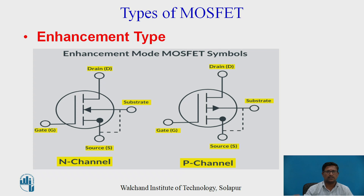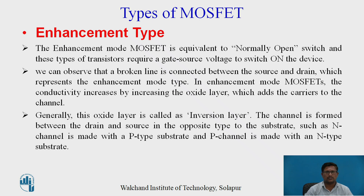The second type is the enhancement type MOSFET. In the enhancement type, there is a dotted or broken line between drain and source; the rest is similar to the depletion type. N-channel and P-channel enhancement mode MOSFETs are shown. The enhancement mode MOSFET is generally called a normally open switch — it requires a gate-source voltage VGS to switch the device on. The broken line between source and drain represents enhancement mode. Conductivity increases by increasing the oxide layer, which adds carriers to the channel; this oxide layer is called the inversion layer. The channel is formed between drain and source in the opposite type to the substrate: N-channel with P-type substrate, and P-channel with N-type substrate.